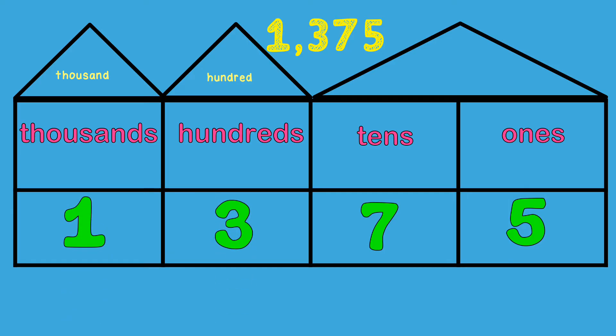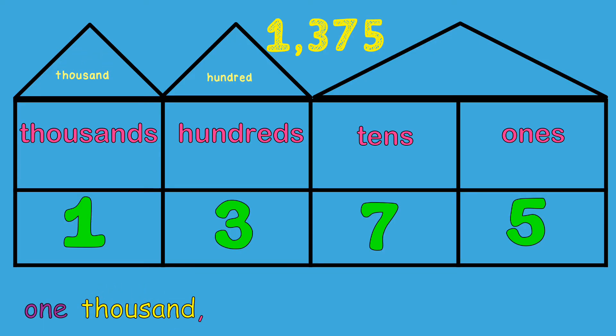Now that we have placed the numbers in the correct place, we will begin to write the number. We will start with the number in the greatest place. In this example, it is the number 1 because it is in the thousands place. We will start by writing out the word form for the number 1. Since the 1 is in the thousands place, we will write thousand behind it. There is 1,000.